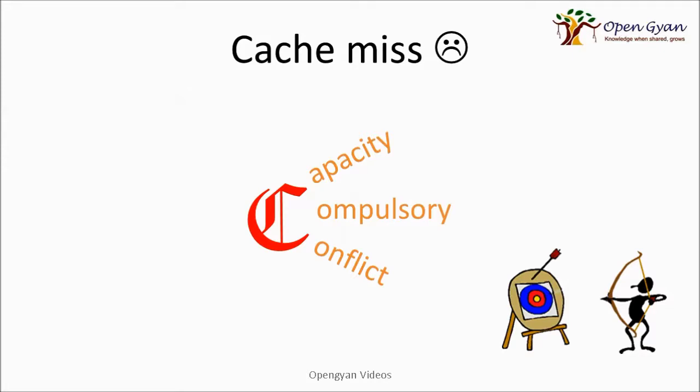A cache miss is one reality we cannot avoid. There are different scenarios where a cache miss can happen. The first is due to capacity — since the cache cannot be very large, a miss occurs simply because there is no capacity to hold the data. The second is the compulsory cache miss, where there is a conflict because the context has changed on the CPU or processor. These compulsory and conflict cache misses cause a stall penalty on the CPU.